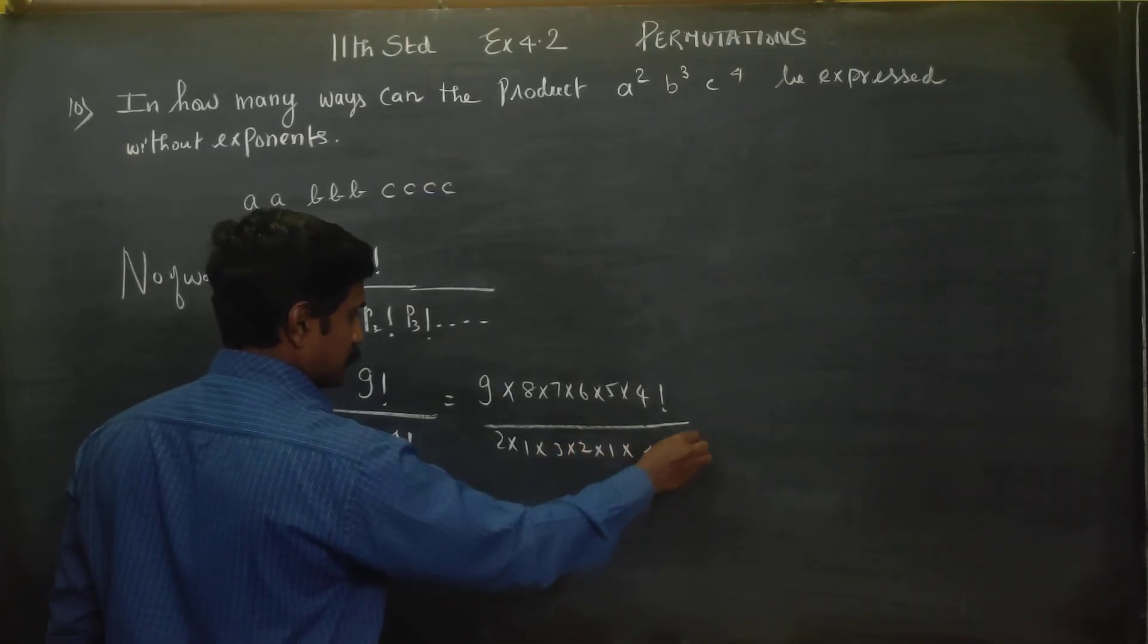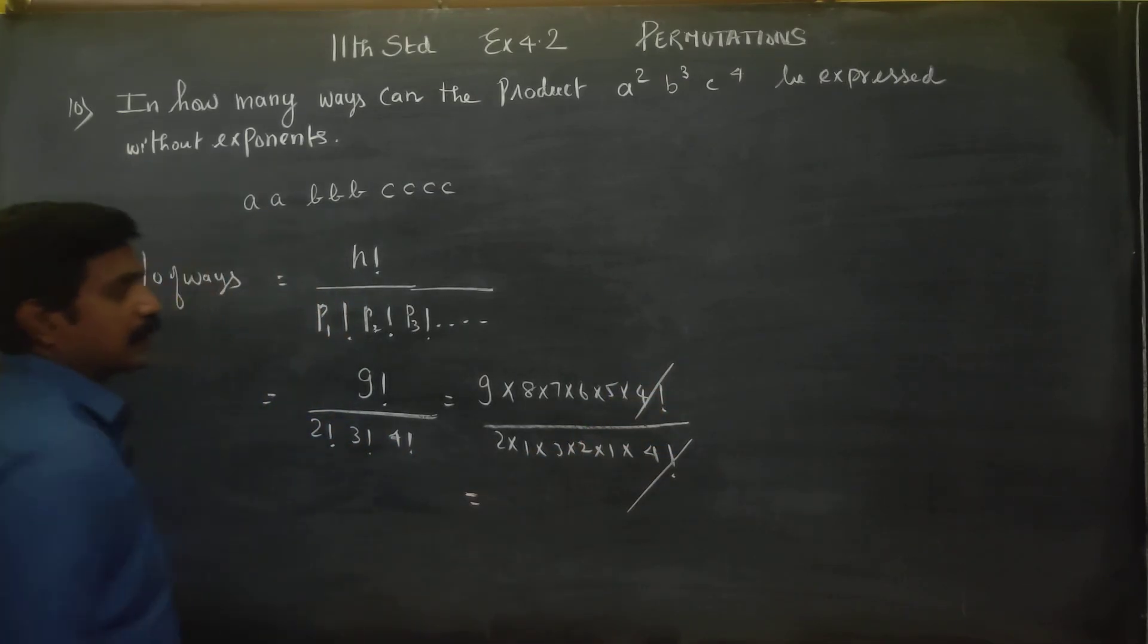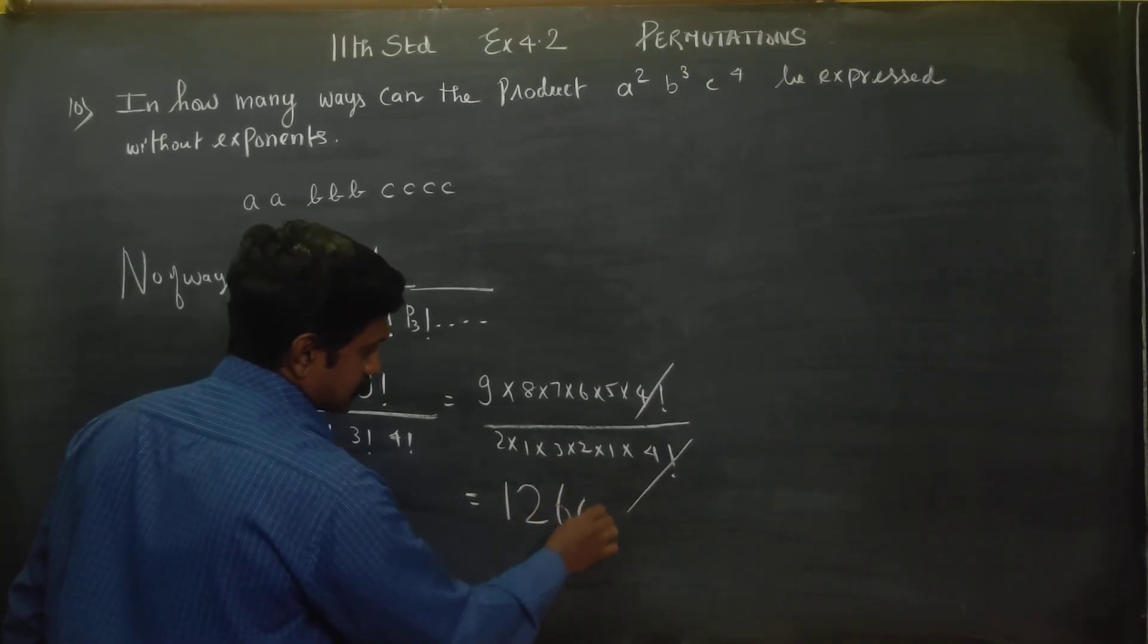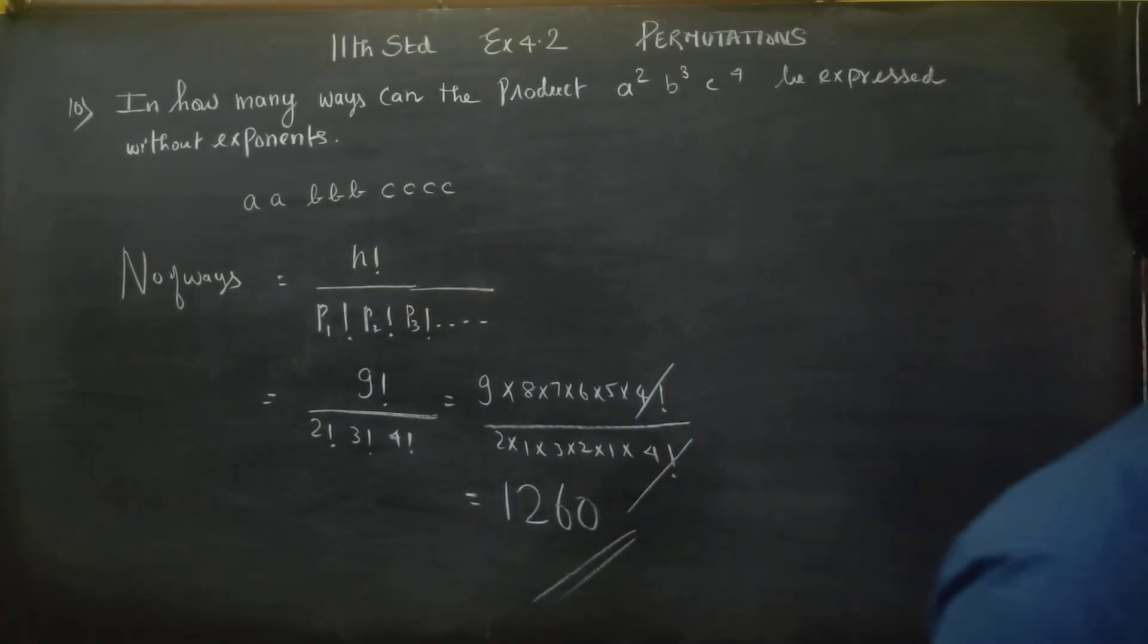4 factorial cancels with 4 factorial. Now we cancel and simplify. Our answer will be 1260, which is the final answer.